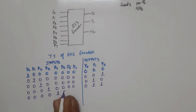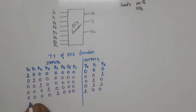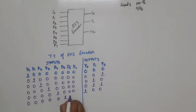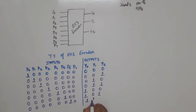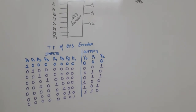Next, D4 is on, remaining all are 0, binary is 1 0 0. Next, D5 is on, remaining all are 0, binary is 1 0 1. Next, D6 is on, remaining all are 0, binary is 1 1 0. Last, D7 is high, and the binary equivalent is 1 1 1.